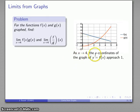So it appears that as x gets close to 4, the y values get close to 1, and we can do the same thing with our values of g(x).